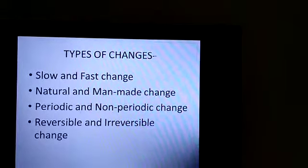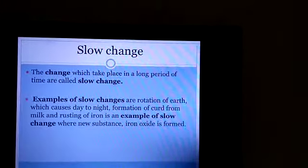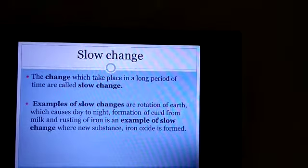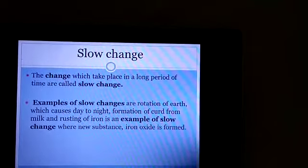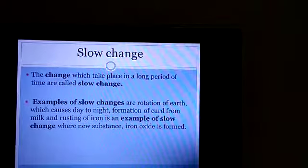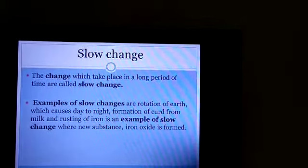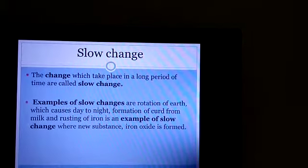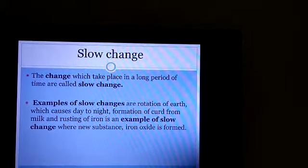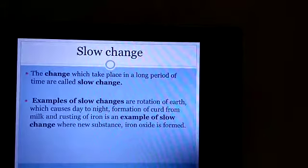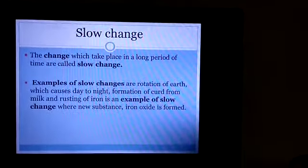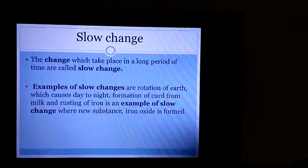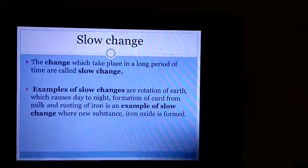First, let's see slow change. For example, rotation of the earth which causes day to night, formation of curd from milk, rusting of iron — all these are examples of slow change, because all these changes take some time to take place.